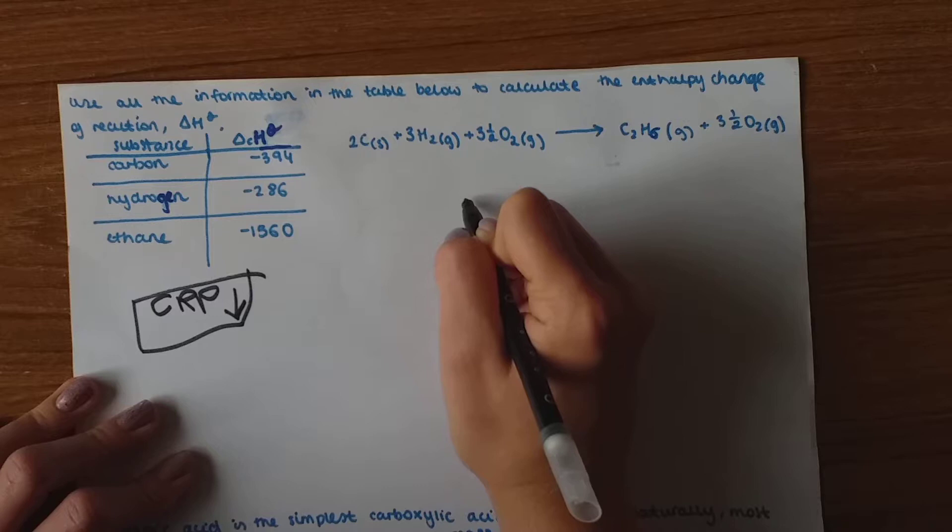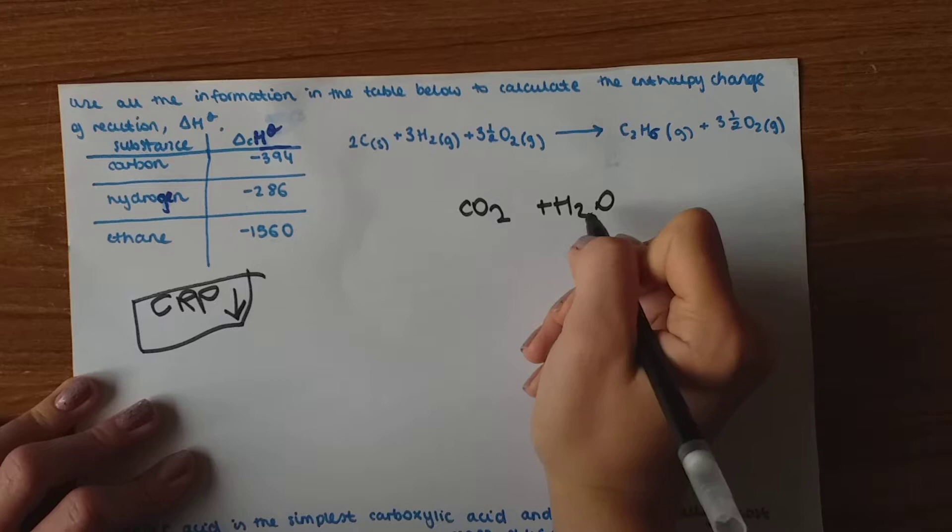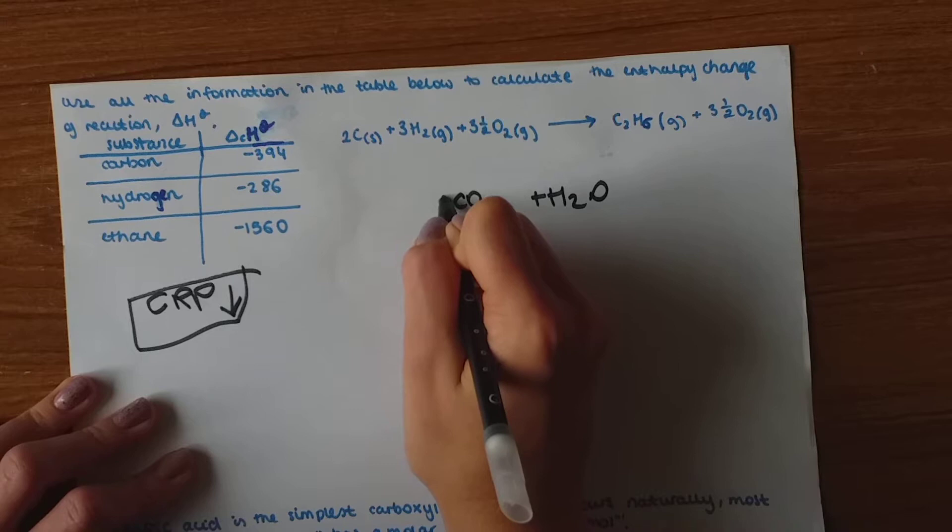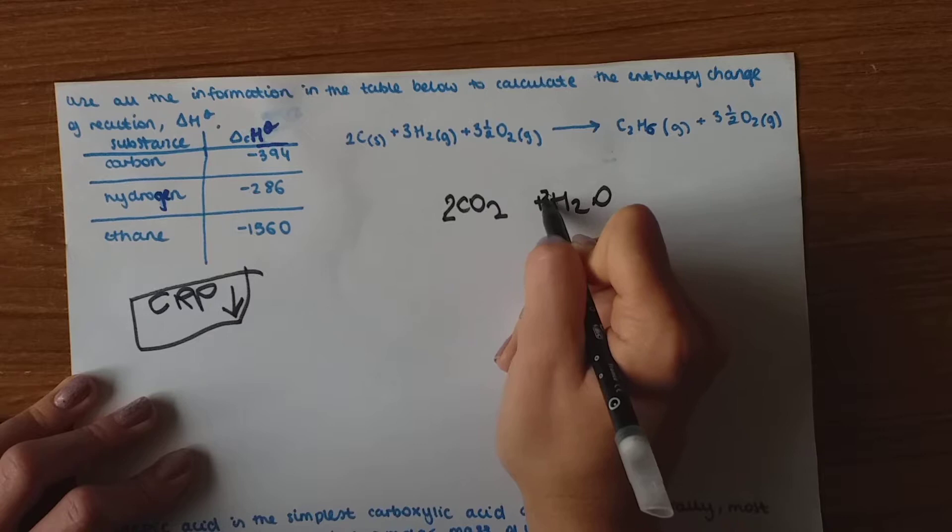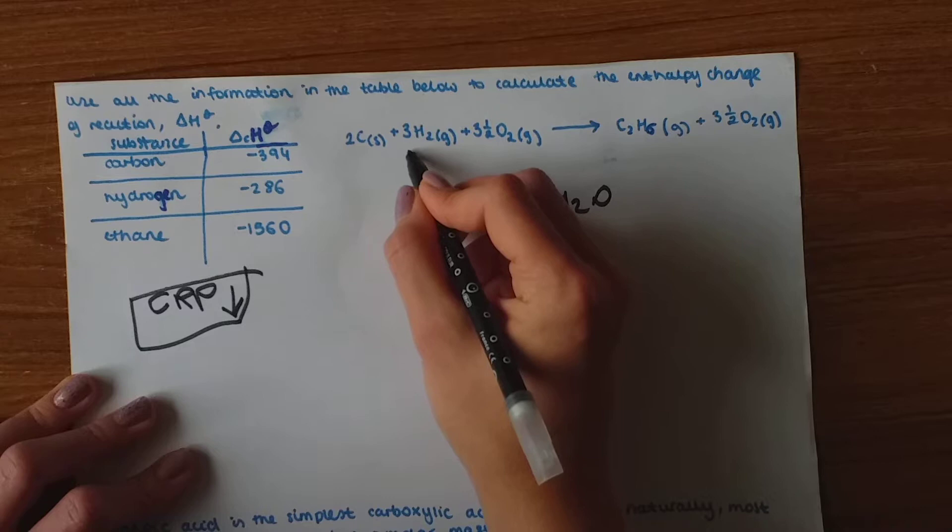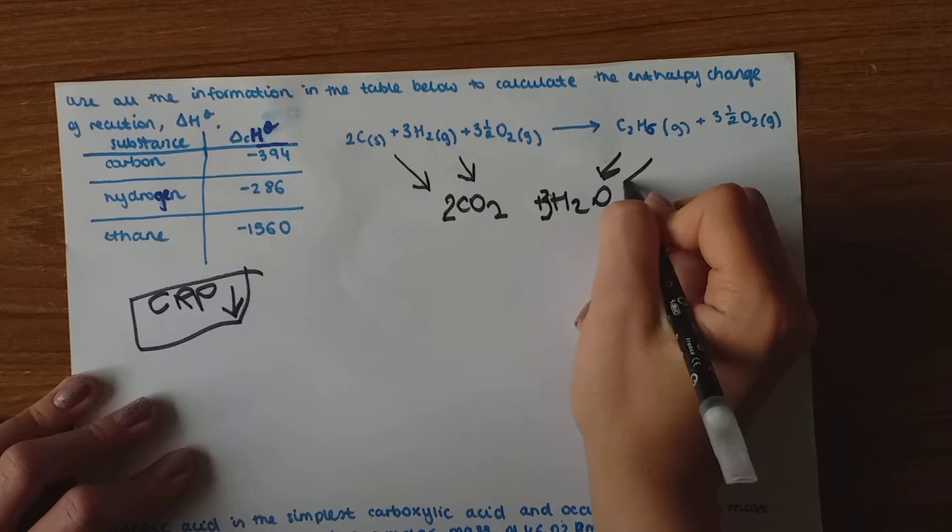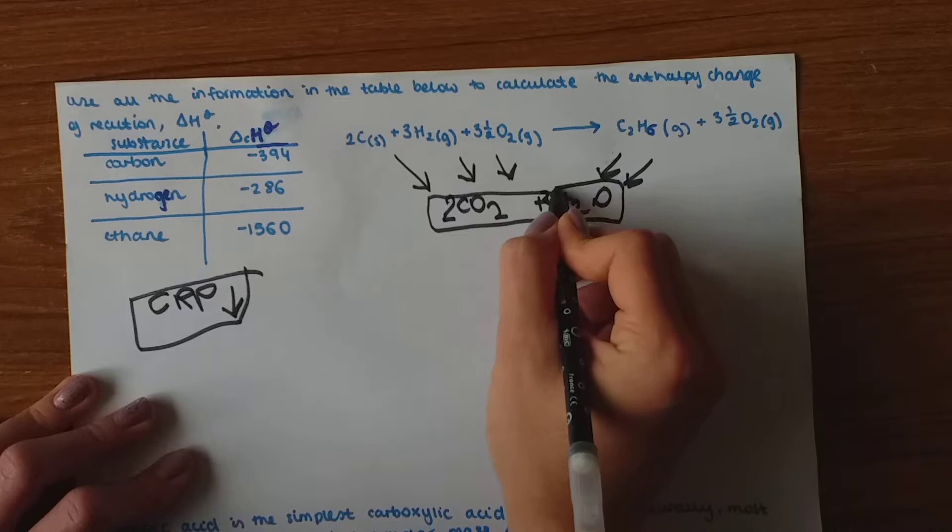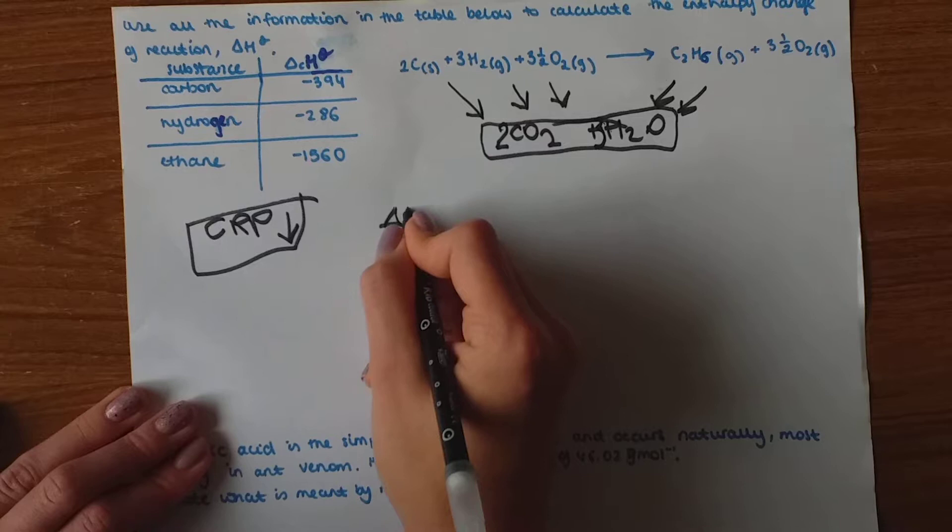So during combustion, carbon dioxide and water are formed. So we have to balance it out. So we've got two carbons, so two carbons here. We've got six hydrogens, so we're going to put three in front. And now we've got four plus three, seven oxygens. And that's exactly what's here. So the arrow is going down to all of this. And now we can start the calculation.